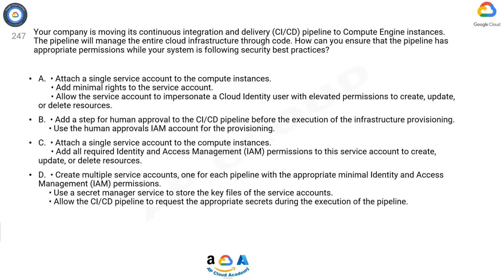Option B: Add a step for human approval to the CI/CD pipeline before the execution of infrastructure provisioning; use the human approver's IAM account for the provisioning. Option C: Attach a single service account to the compute instances and add all required Identity and Access Management (IAM) permissions to the service account to create, update, or delete resources.